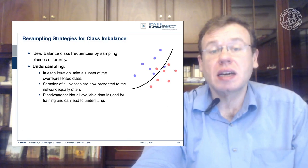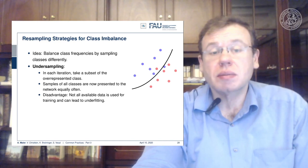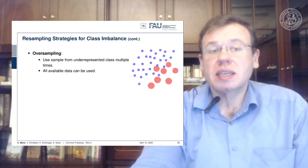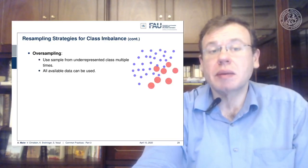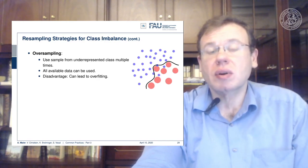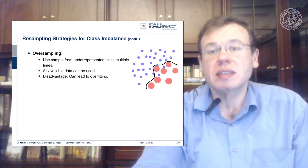With undersampling, the minority class is now seen approximately as frequently as the other class. However, the disadvantage is that you are not using all available data — you are discarding 99% of it. Another technique is oversampling, where you sample more often from the underrepresented classes, allowing you to use all of the data. The disadvantage is that it can lead to rather heavy overfitting towards the less frequently seen examples.